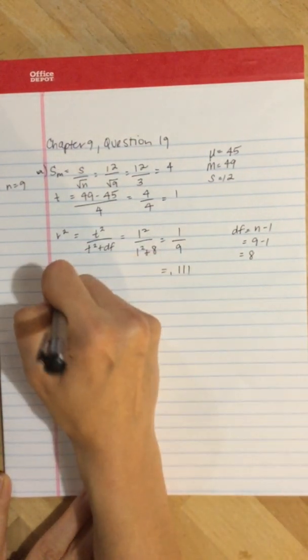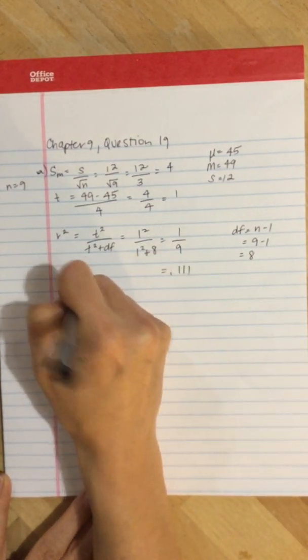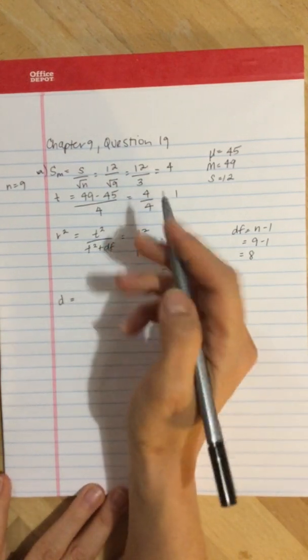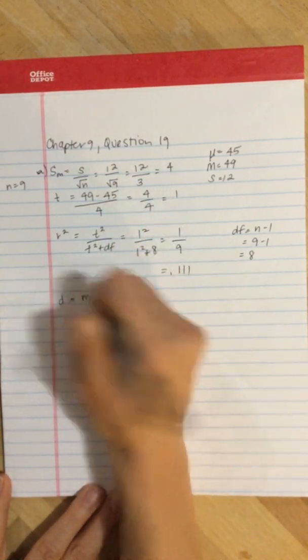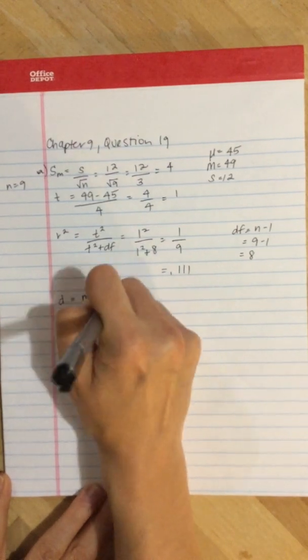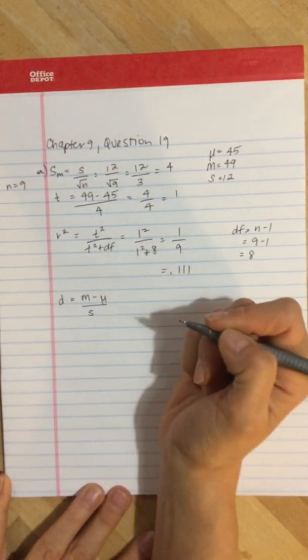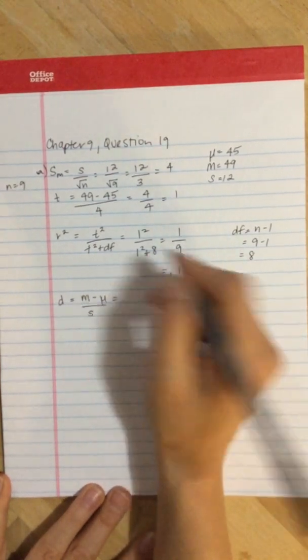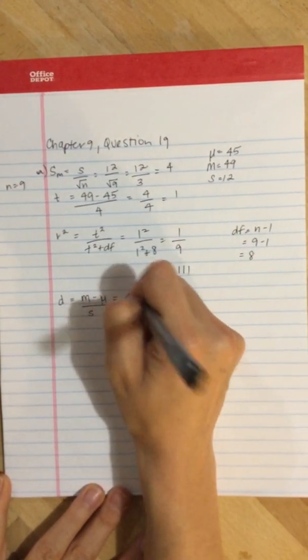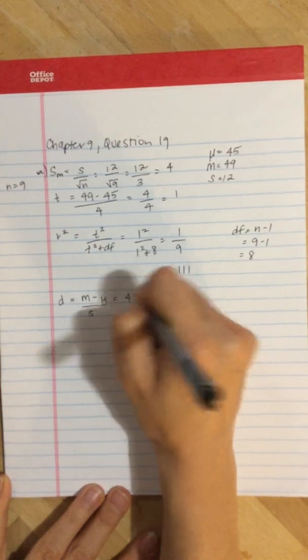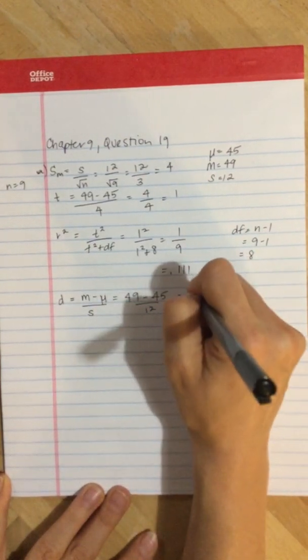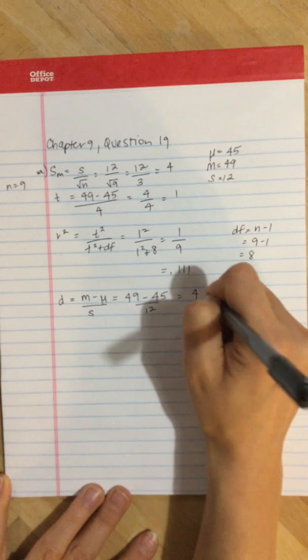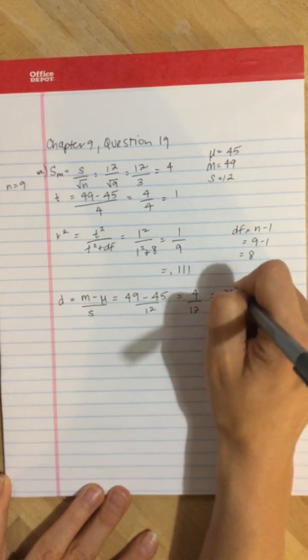To compute Cohen's d, the formula is the mean minus the population value divided by the standard deviation. We take 49, subtract 45, divided by 12. 4 divided by 12 equals 0.333.